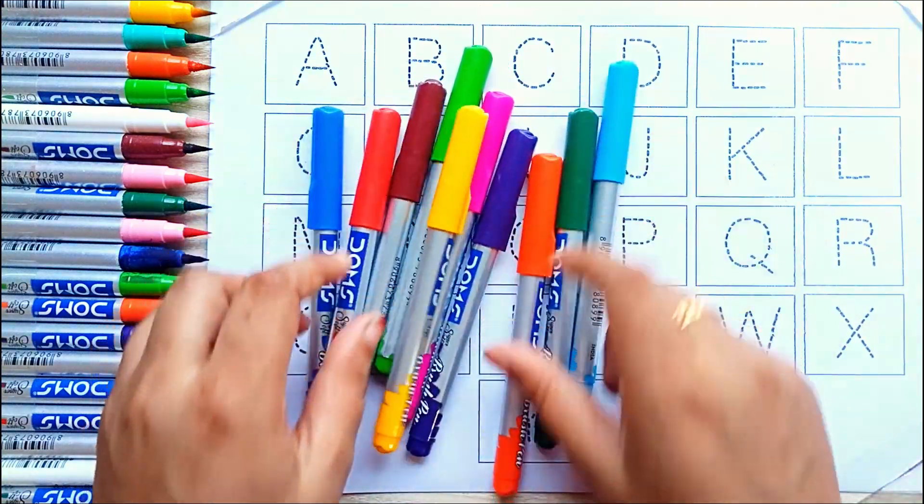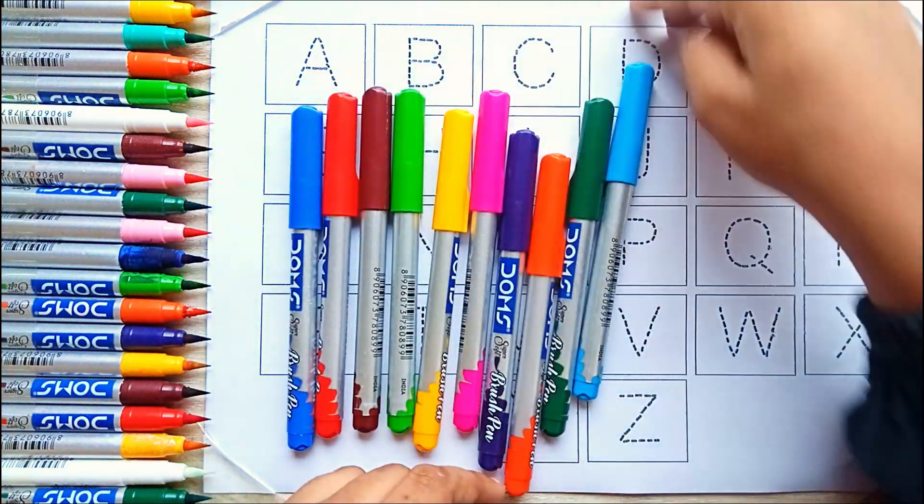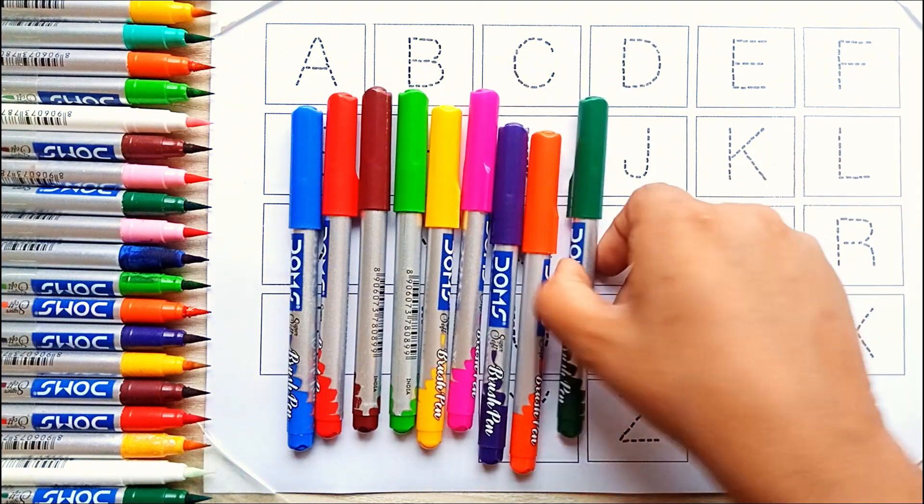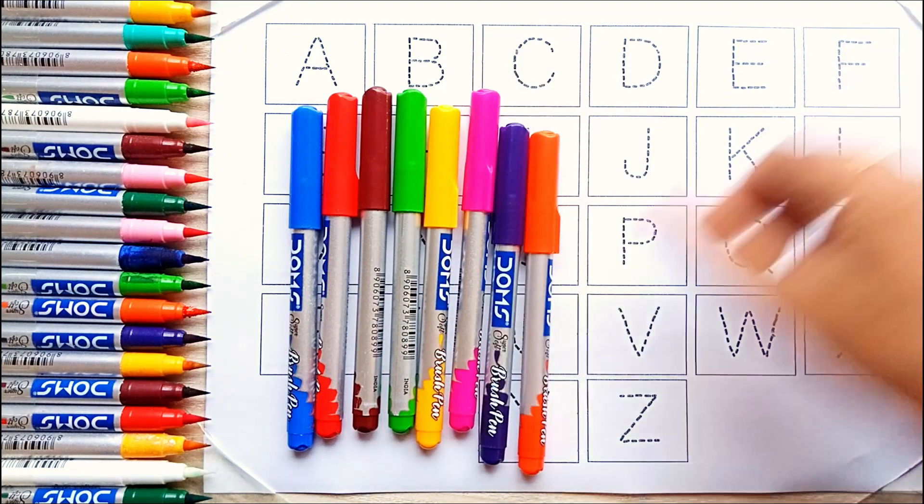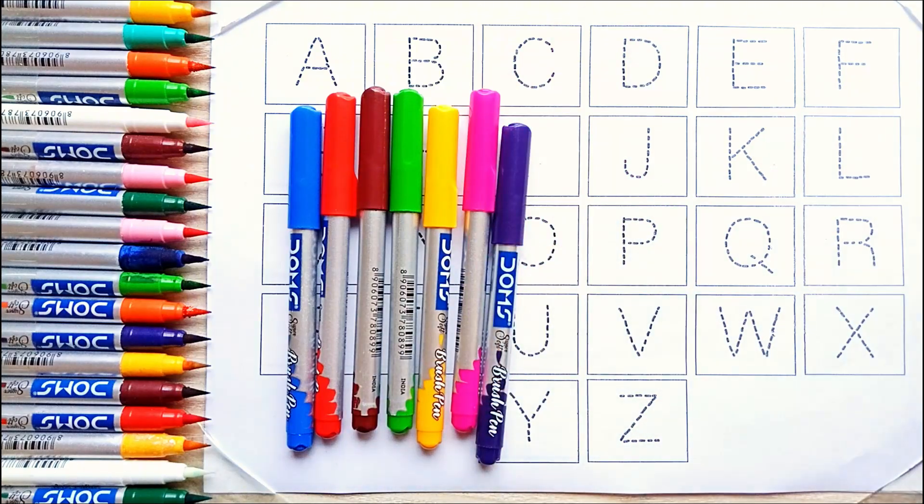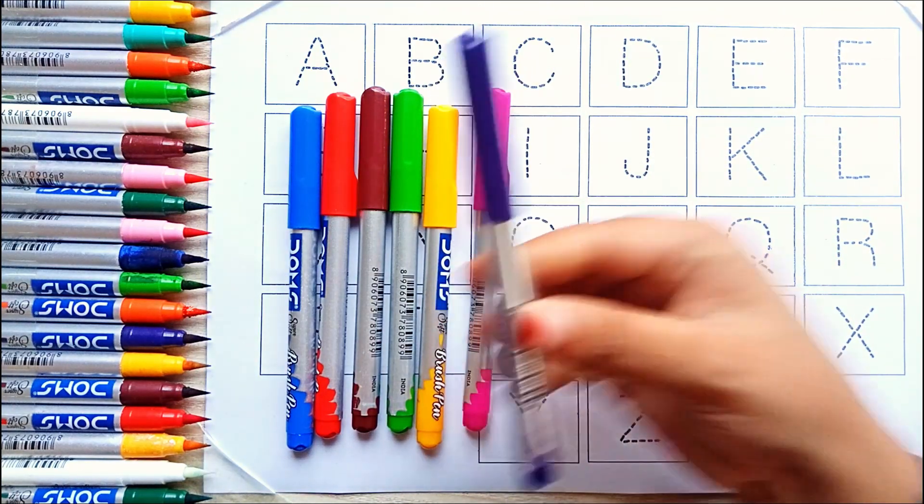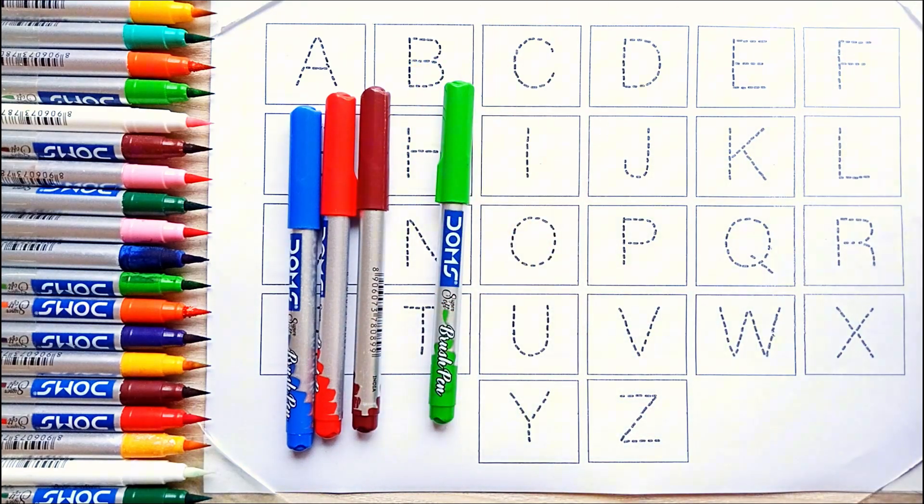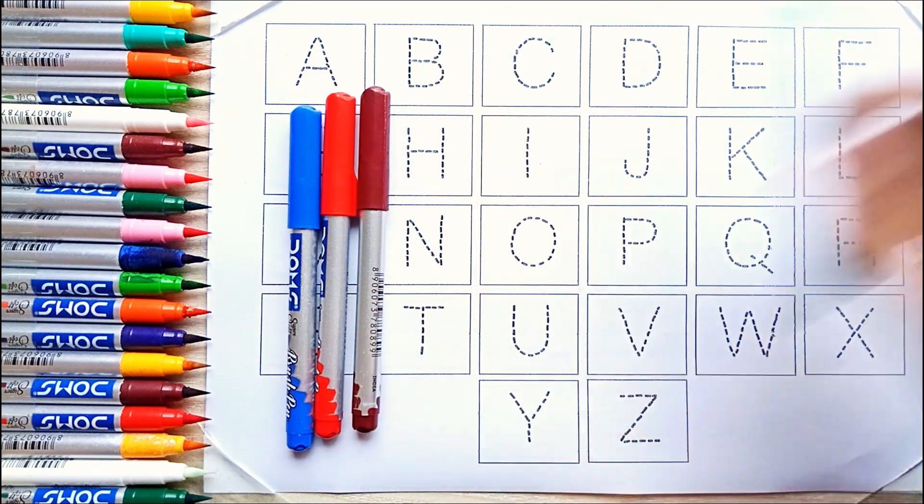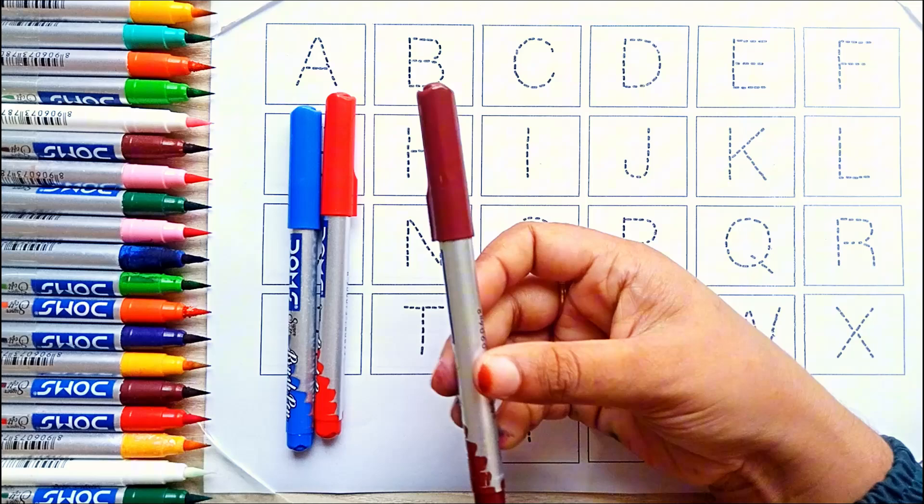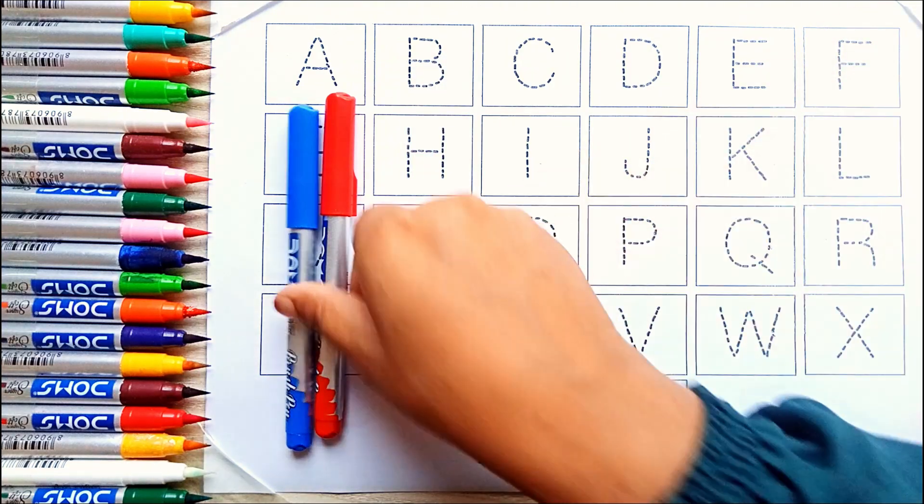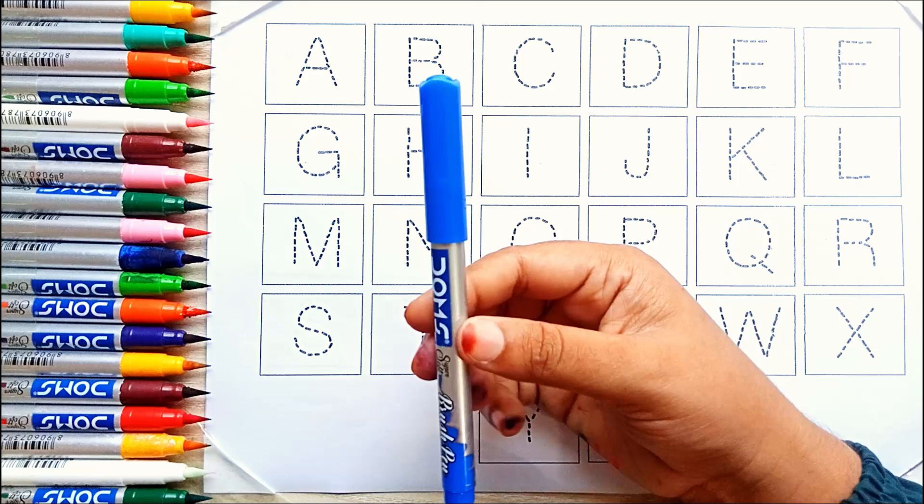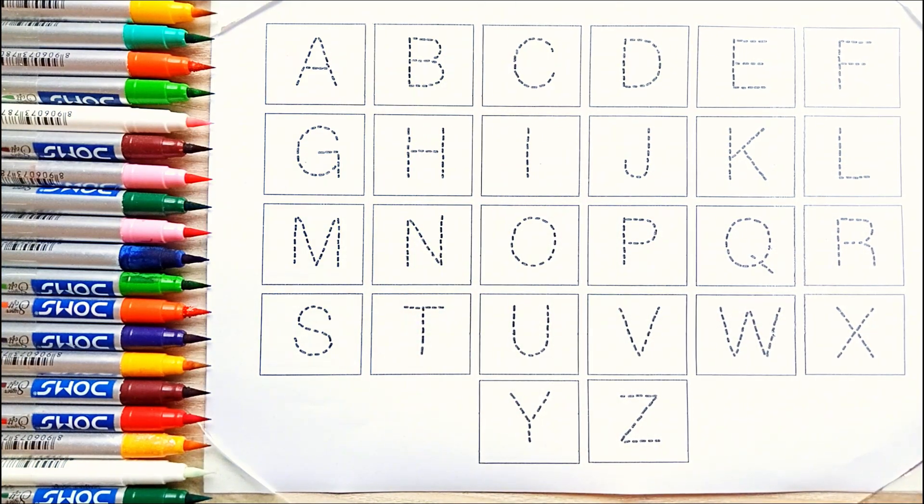Let's start some colors name. It's a blue color, green color, orange color, violet color, pink color, yellow color, light color, brown color, red color, and blue color. Let's start.